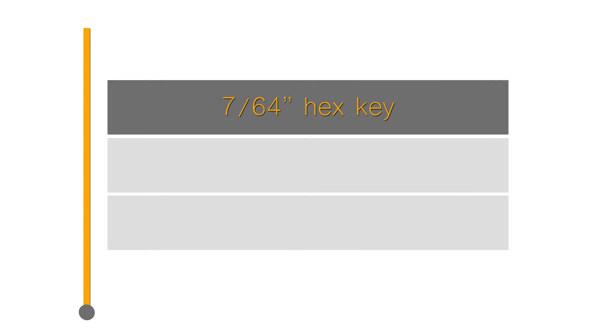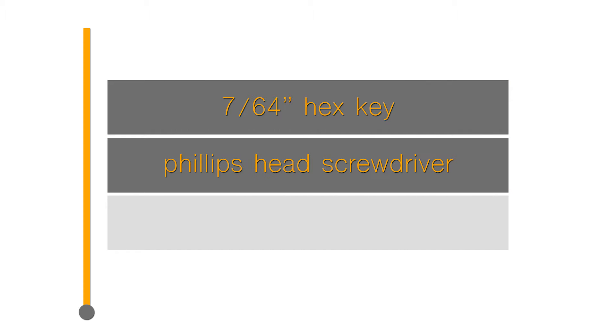This video covers assembly of the 785 gear rack kit. For this project you will need a 7/64 inch hex key, a Phillips head screwdriver, and a pair of pliers.